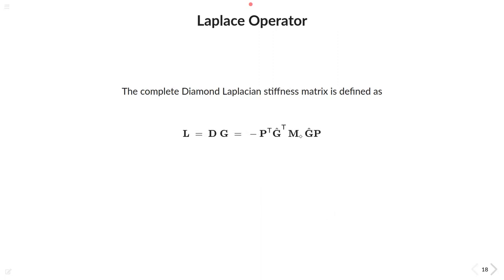The Laplacian now being formally defined as the divergence of the gradients of the function, we can simply define it by using the product of the formally introduced matrices and therefore obtain our new diamond Laplacian stiffness matrix.